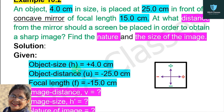The first given value is object size h equals to plus 4 cm. The question gives 4 cm, and we take it as positive. Next, object distance u equals to minus 25 cm — the question gives 25 cm, but we take minus because the object is placed in front of the mirror. Next, focal length f equals to minus 15 cm. The question gives 15 cm, but we take minus because it is a concave mirror — the focus is on the left side, so focal length has a minus sign.